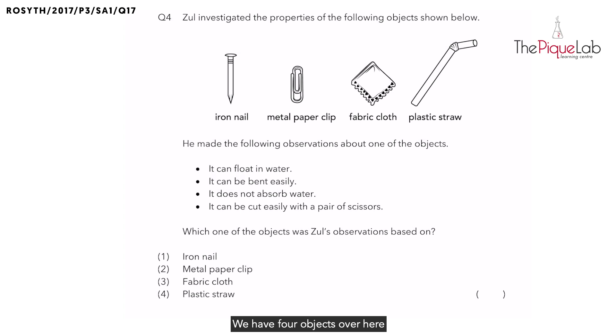We have four objects over here: iron nail, metal paper clip, fabric cloth, and plastic straw. Based on these four observations made by Zhu, we are to identify the correct object that Zhu is talking about. So let's read each observation and eliminate the objects which do not fit the observation.